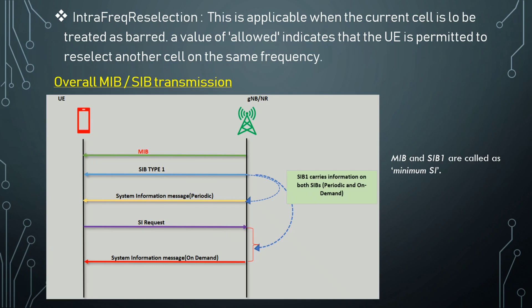For the on-demand system information case, the initial steps are the same — the UE switches on, searches PSS and SSS, performs PBCH decoding to get and store the MIB, checks if the cell is barred, then decodes SIB1 using the provided parameters and stores the result. When SIB1 indicates on-demand system information, the UE checks its RRC status — if idle or inactive state — and based on that triggers the lower layer to initiate the RACH process. This is the key difference between the two cases.